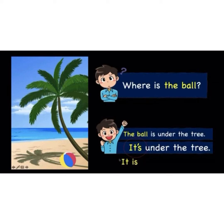So, we can say 'it is under the tree.' And to make it even shorter, we change 'it is' to 'it's'. It's under the tree. Meaning here, 'it is' and 'it's' — I-T-apostrophe-S — it's the same thing.